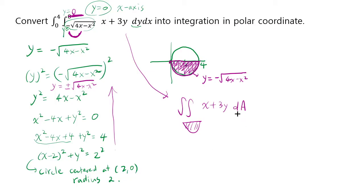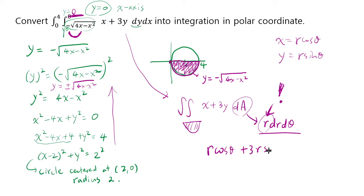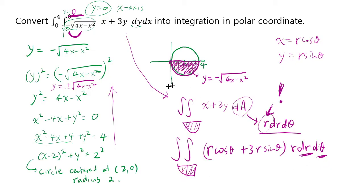We need to convert to polar coordinates. dA in polar coordinates is r dr dθ — don't forget the r! There's always a factor of r when converting from dy dx to dr dθ. Recall that x equals r cosine theta and y equals r sine theta, so the integrand becomes r cosine theta plus 3r sine theta, all times r dr dθ.